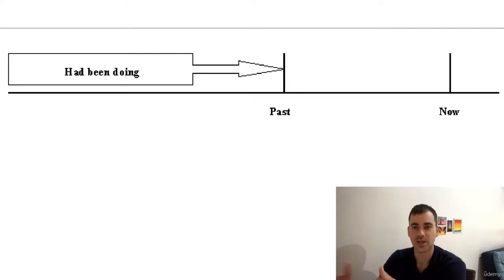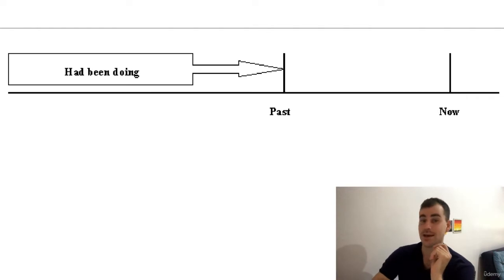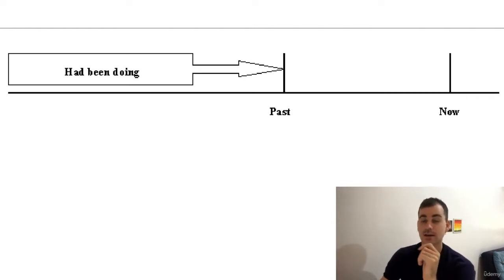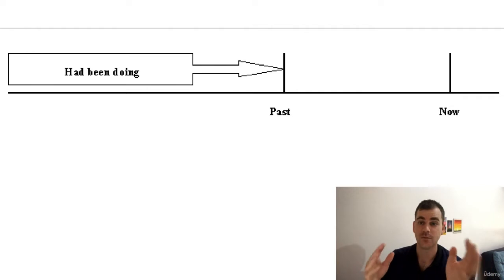Look at the chart again. The airplane flew overhead at the point past. She had been running for some time before that point.